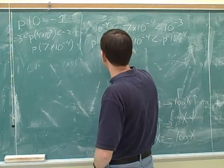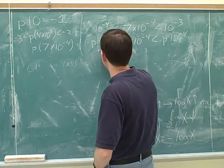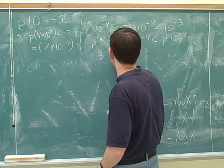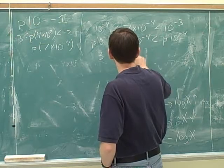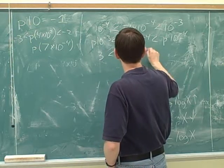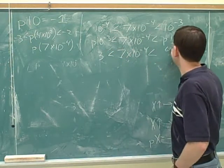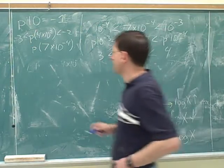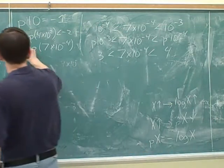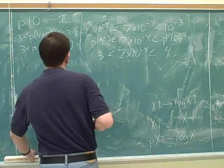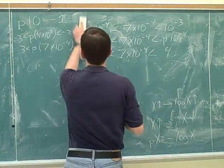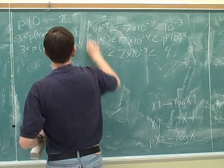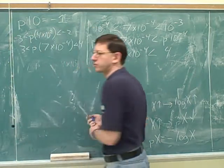Then it's very easy to take the p of something. The p is just the negative of its exponent. So the negative of the exponent here is positive 3, and the negative of the exponent here is positive 4. And that gave you your answer: the p of this number is between 3 and 4.